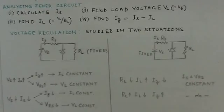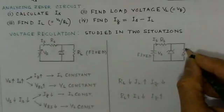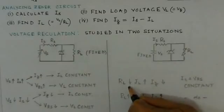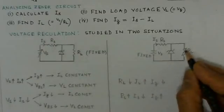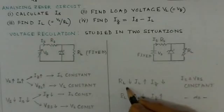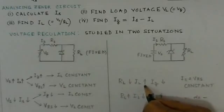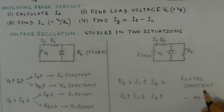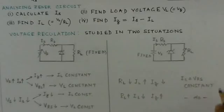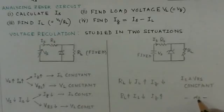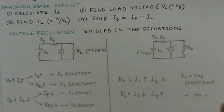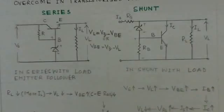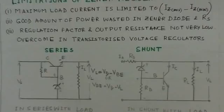When VS decreases, IS decreases, which decreases the zener current, while the load current remains constant, and VL remains constant. In the second case, if load resistance RL is reduced, load current IL increases. Then IZ must decrease to keep IS and VRS constant. If RL increases, IL reduces and IZ increases, again keeping IS and VRS constant.